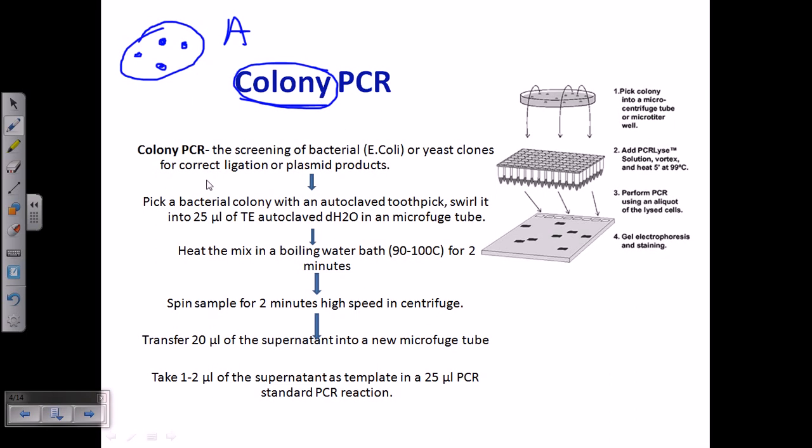The procedure: we need to pick the bacterial colony with an autoclaved toothpick, then put it into TE buffer or distilled water. We heat this mixture in a microcentrifuge tube at 90 to 100 degrees Celsius temperature for two to five minutes. After that, we spin the sample for two minutes at 6000 RPM.